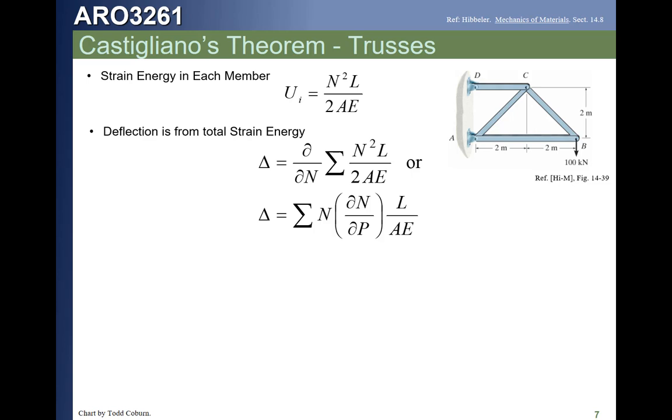Since we're going to do the differentiation first, what we can look at and say, the change in strain with respect to N, the only thing in there is the N. Therefore, we can just take the derivative, the partial of that N squared term, and then do the summation. You'll notice the easiest way to do this, since these are all constant force members, is just tabular method. We will look at an example in a bit.